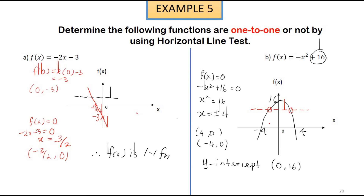Applying the horizontal line test to this graph, we can see there are two points of intersection between the graph and the horizontal line. Since there are two intersection points, we can say that f(x) = -x² + 16 is not a one-to-one function.